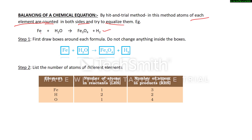We are taking this example: Fe plus H₂O reacts to form Fe₃O₄ and H₂. We will perform this step by step. The first step is to draw boxes around each formula. The purpose of drawing these boxes is that we will not change anything inside the box — the formula written inside will remain unchanged.